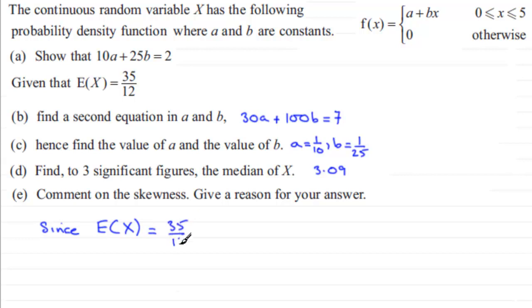In other words, if you convert that to a decimal, is 2.916 recurring. And what I notice is that the mean E(X) - okay let's just put the mean - turns out to be a value less than the median that we worked out in Part D. So the mean is less than the median.